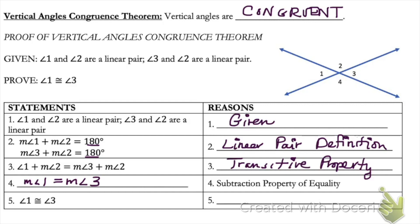Going from line four to line five: since the measure of angle one equals the measure of angle three, that means angle one is congruent to angle three — by the definition of congruent angles. Remember, congruent angles have the same measure. So now we've used the linear pair postulate to prove the vertical angle congruence theorem, meaning vertical angles are always congruent. We could do the same thing for angles two and four in this picture.